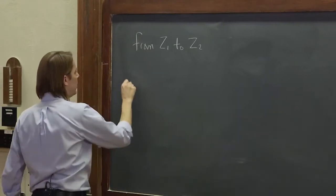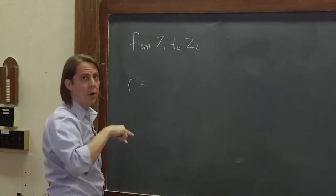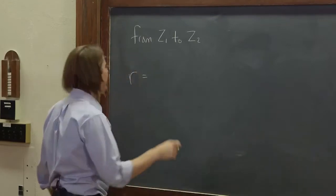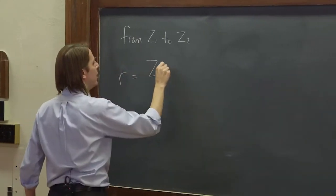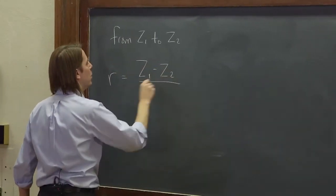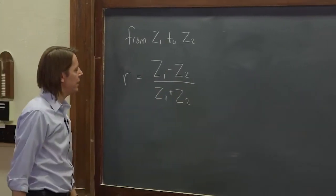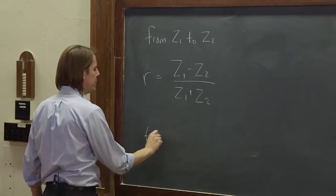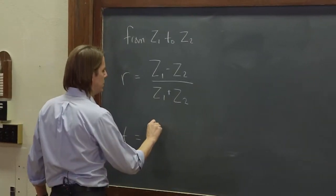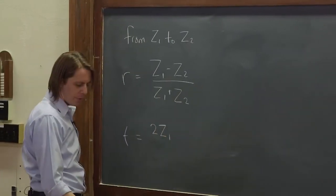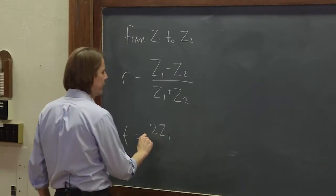Then the little r is z1 minus z2, where you're coming from minus where you're going, over the sum z1 plus z2. And the little t, the transmission coefficient, is 2z1, where you come from, over z1 plus z2.